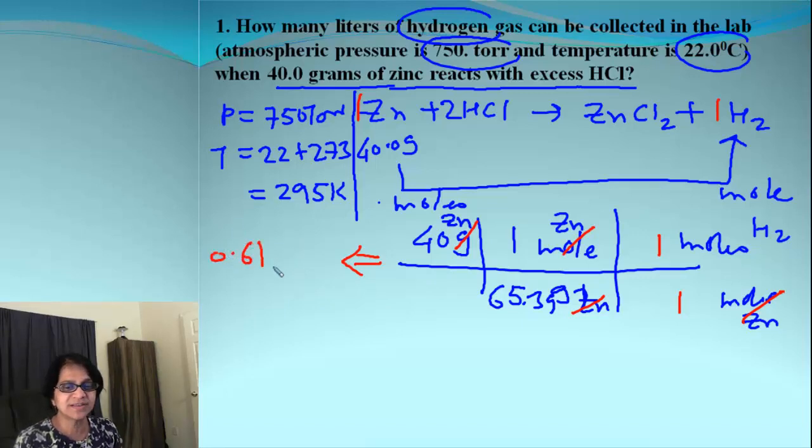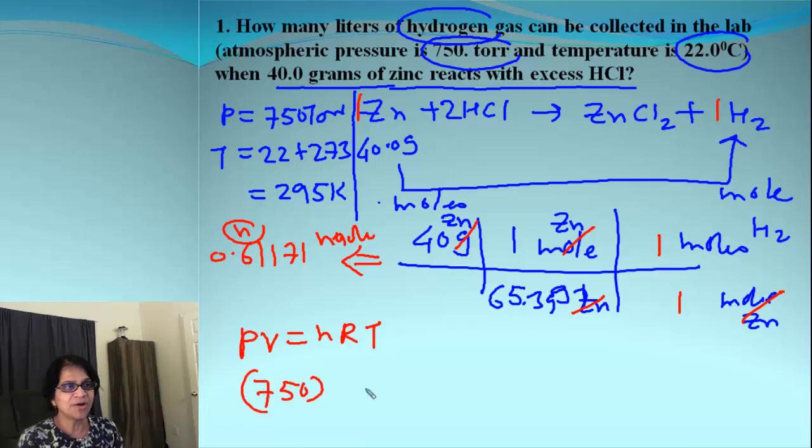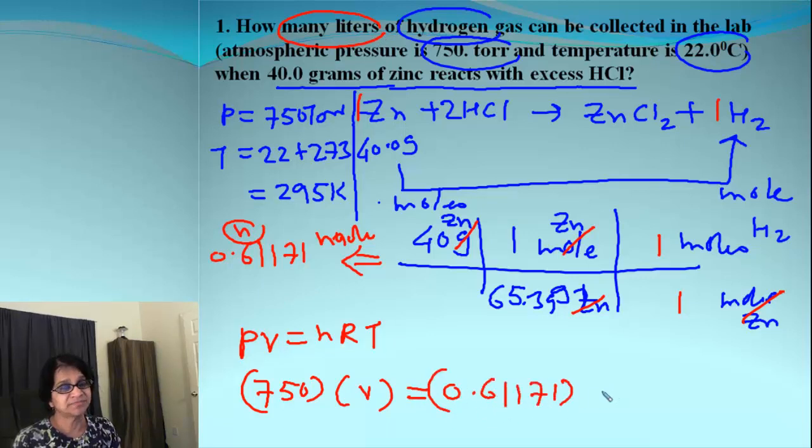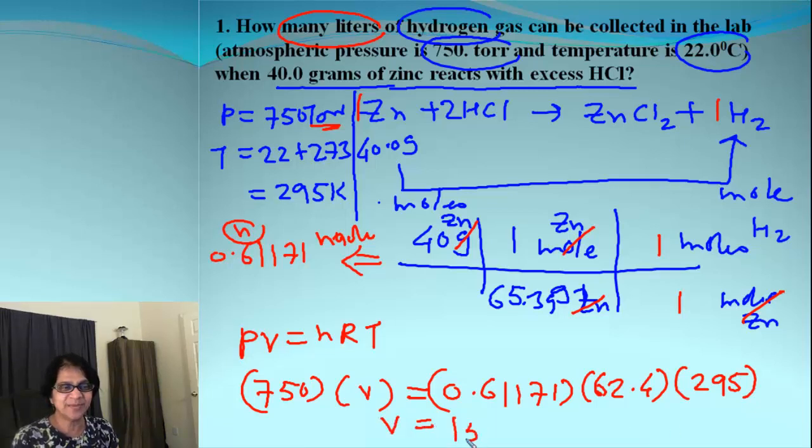We got 0.61171, that is number of moles or n. And then we can go back and plug and check in the ideal gas law, which is PV equals nRT. So pressure is 750, volume is something we need to find out. It's asking how many liters, so let's put that V there. n is the value which we figured out, so that's 0.61171. R, the value of R must be matching with the units for pressure, and if it's a Torr value, then the value for R is 62.4. And the value for temperature is 295 Kelvin. When we solve all of that, we end up getting volume at 15.0 liters, and that's the amount of hydrogen.